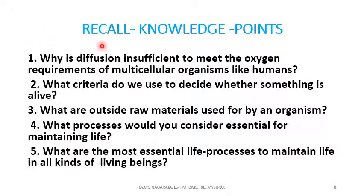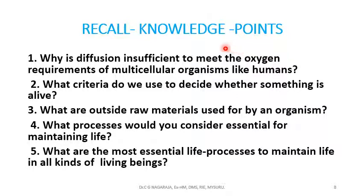At the end of the chapter you have some questions. Use your knowledge base and give knowledge points to answer them. For the question 'Why is diffusion insufficient?' — the focus is on diffusion and oxygen. You must say: diffusion takes place only in single-celled organisms in direct contact with the environment; oxygen enters the living cell by diffusion. In multicellular organisms with millions of cells not in direct contact with the environment, diffusion is insufficient because it cannot meet the oxygen demand of all cells.